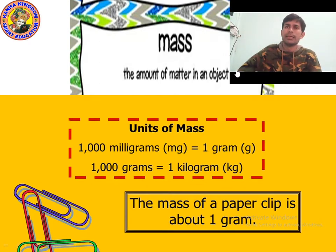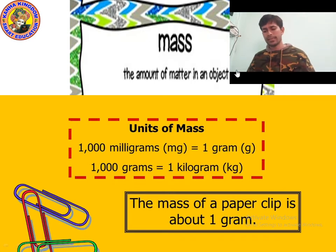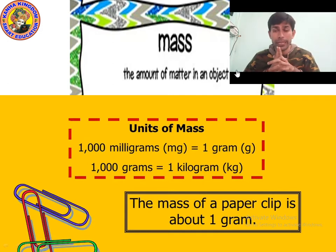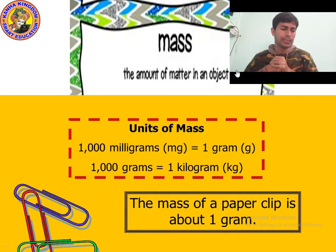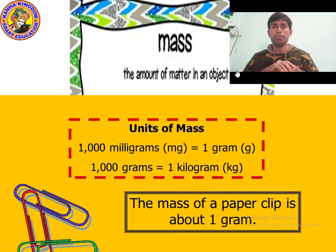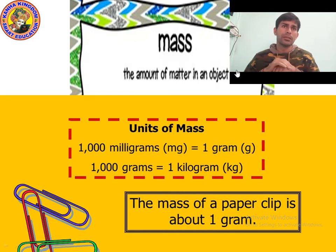What is length? Length is the distance between two points. The basic unit of length is meter. One kilometer is equal to one thousand meters, and one meter is equal to hundred centimeters. Kilometer is the bigger unit, meter is the standard unit. In short, kilometer is written as km, meter as m, and centimeter as cm.